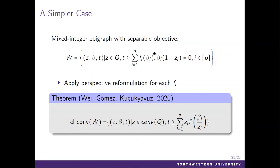We extend our result to the mixed-integer program with several convex objectives. Suppose the objective function is the sum of several convex functions for each of the continuous variables beta_i's. We prove that the convex hull description can be easily obtained by applying the perspective reformulation for each of the separate component functions. The perspective formulation directly gives us the convex hull description.